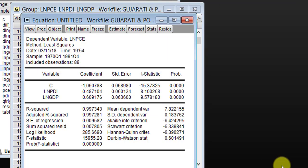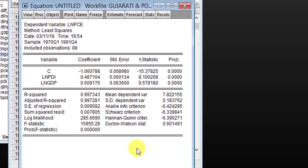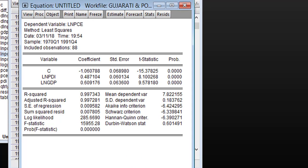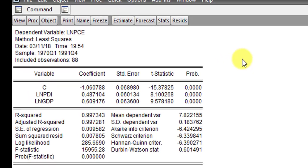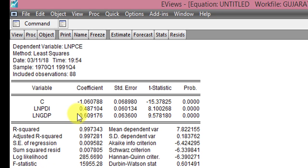So click OK. And here is the output. Remember, we are assuming that the series, in this case, are integrated of order 0. So that is the assumption.